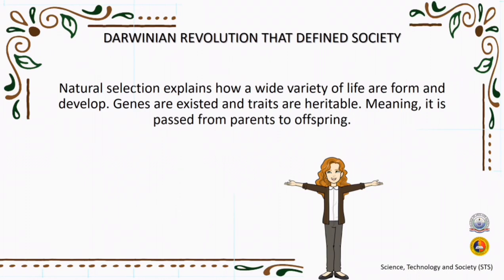Darwin did not know that genes existed, but he could see that many traits are heritable, meaning they are passed from parents to offspring. Mutations are changes in the structure of the molecules that make up genes — that is what we call DNA. The mutation of genes is an important source of genetic variation within a population. Mutations can be random, for example when replicating cells make an error while copying DNA, or happen as a result of exposure to something in the environment like harmful chemicals or radiation.